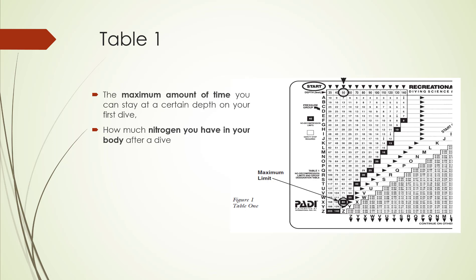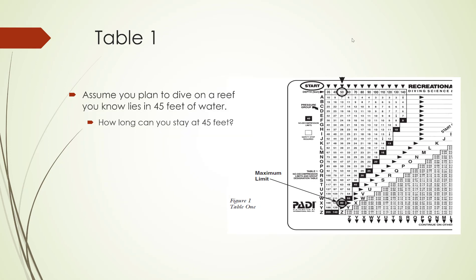Table 1 has two purposes: it tells you the maximum amount of time you can stay at a certain depth on your first dive, and it tells you how much nitrogen you have in your body after a dive. The easiest way to learn how to use Table 1 is to follow an example. Assume that we want to plan a dive to a reef that lies at a depth of 45 feet. The question is: what is the maximum time we can stay at 45 feet without exceeding the limits of no decompression diving?